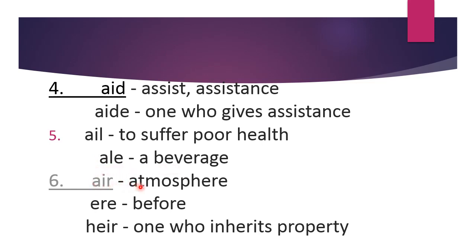Next is 'air', meaning atmosphere. Then 'ere', meaning before. And 'heir' — one who inherits property. So these are three homonym words: 'air' means atmosphere, 'ere' means before, and 'heir' means one who inherits property.